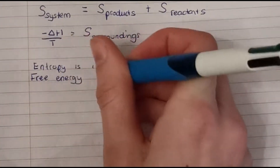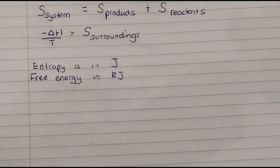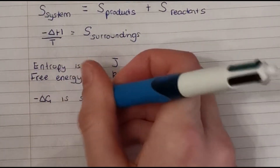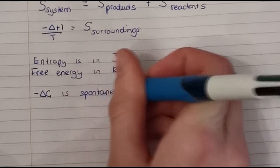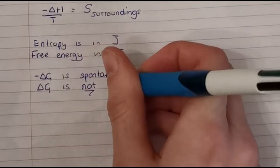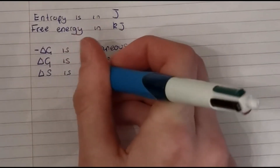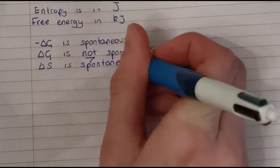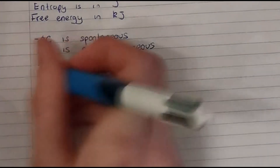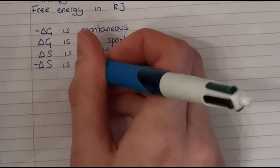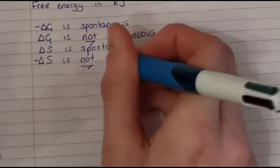A system: it equals S products plus S reactants, minus delta A divided by T. Here's S surroundings — entropy is in J, free energy JK.